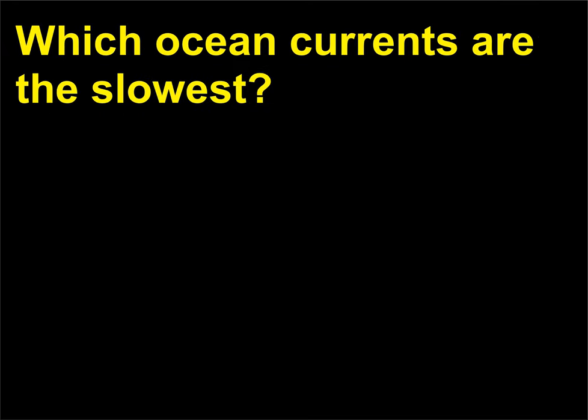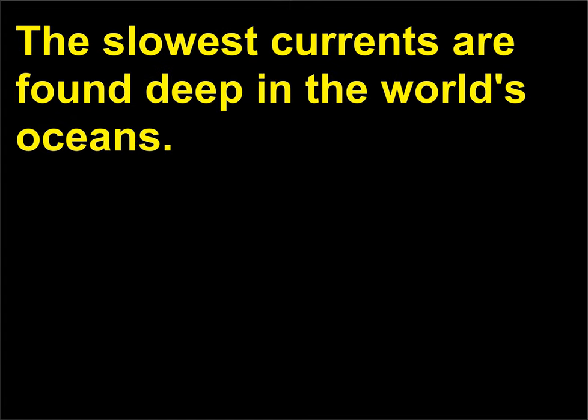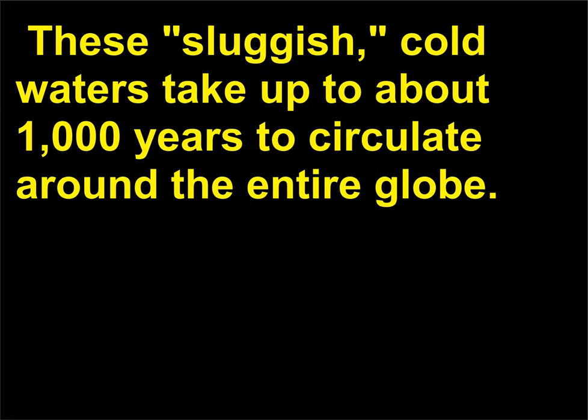Which ocean currents are the slowest? The slowest currents are found deep in the world's oceans. These sluggish, cold waters take up to about 1,000 years to circulate around the entire globe.